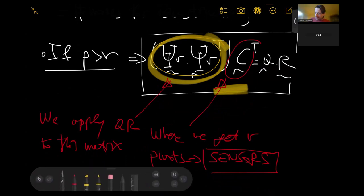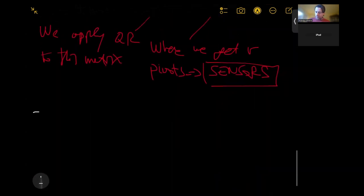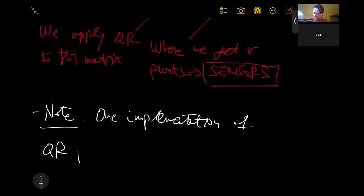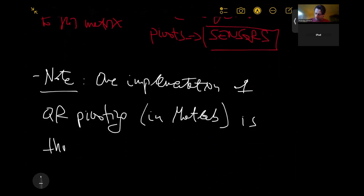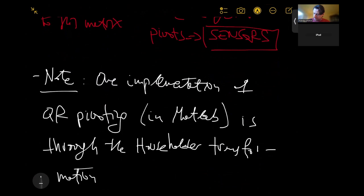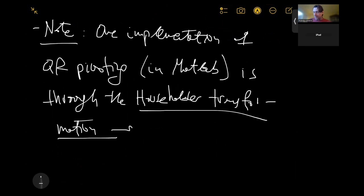How does this implementation take place in practice? This is a note to finish this part of the chapter. One implementation of QR pivoting (for instance in MATLAB, there's many others, but this is just one possible implementation) is through the Householder transformation. Basically, what we are doing is a reflection about a plane.